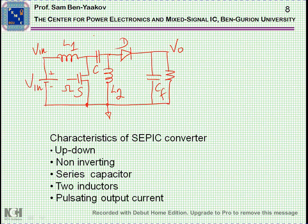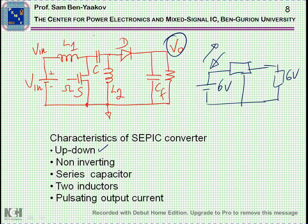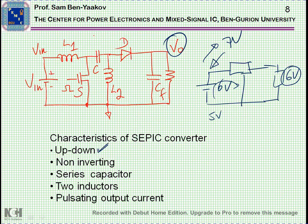Let's summarize the characteristics of the SEPIC converter. First of all, it's an up-down converter — that's very good. You can get a voltage which is higher or lower. This is very useful in cases when, for example, you have a six-volt battery and a load that requires a stable six volts. As you charge the battery the voltage might go up to seven volts, and as you deliver charge to the load it might drop to five volts. So you need a converter capable of supplying six volts while the input could be higher or lower — this is why an up-down converter is really very convenient in many applications.